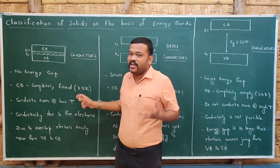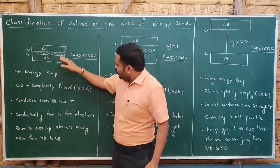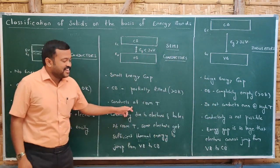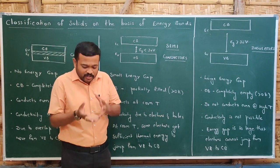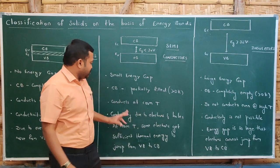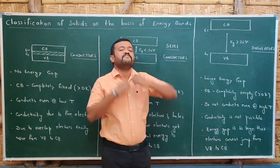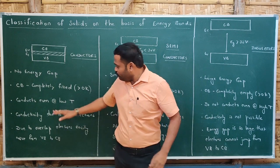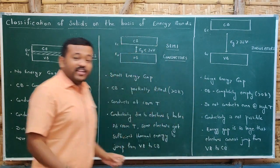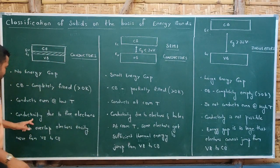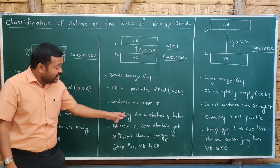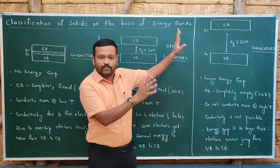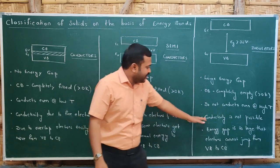Conductors conduct even at low temperature because electrons do not require any energy — even at 0 Kelvin. Semiconductors conduct at room temperature, where some electrons get sufficient thermal energy and jump to the conduction band. But insulators do not conduct even at high temperatures because electrons do not get sufficient energy to cross the large gap. Regarding conductivity: in conductors, conductivity is due to free electrons; in semiconductors, conductivity is due to both electrons and holes, which we will study in coming classes; in insulators, conductivity is not possible.